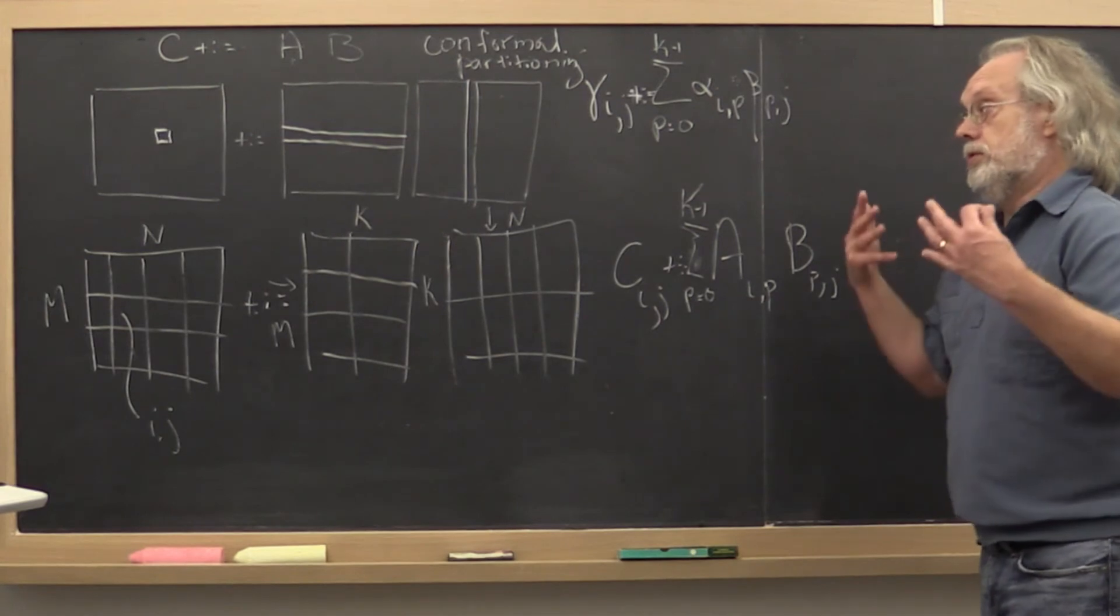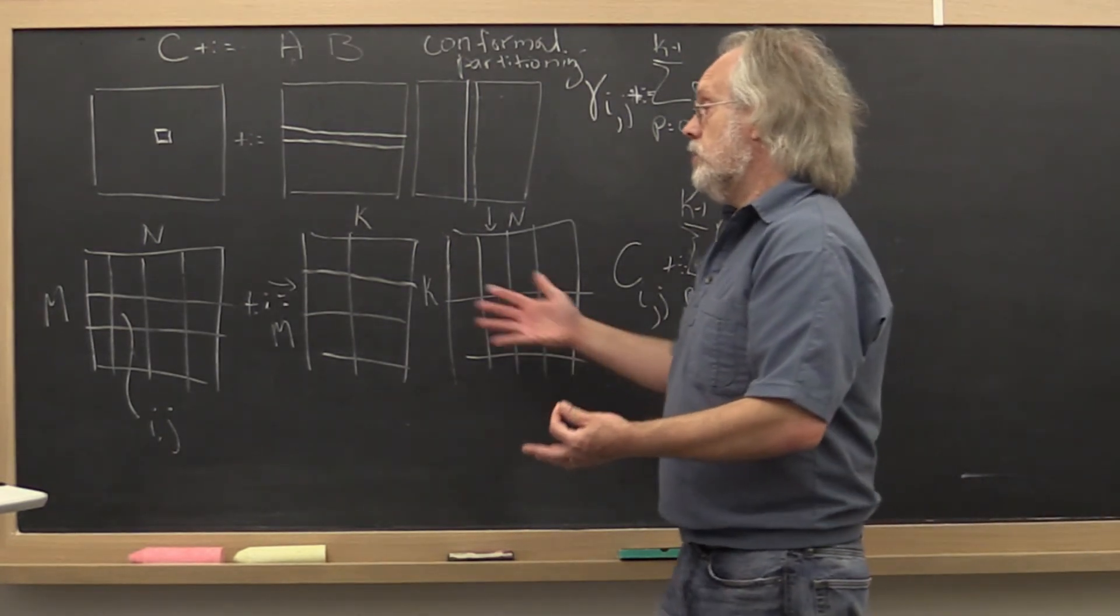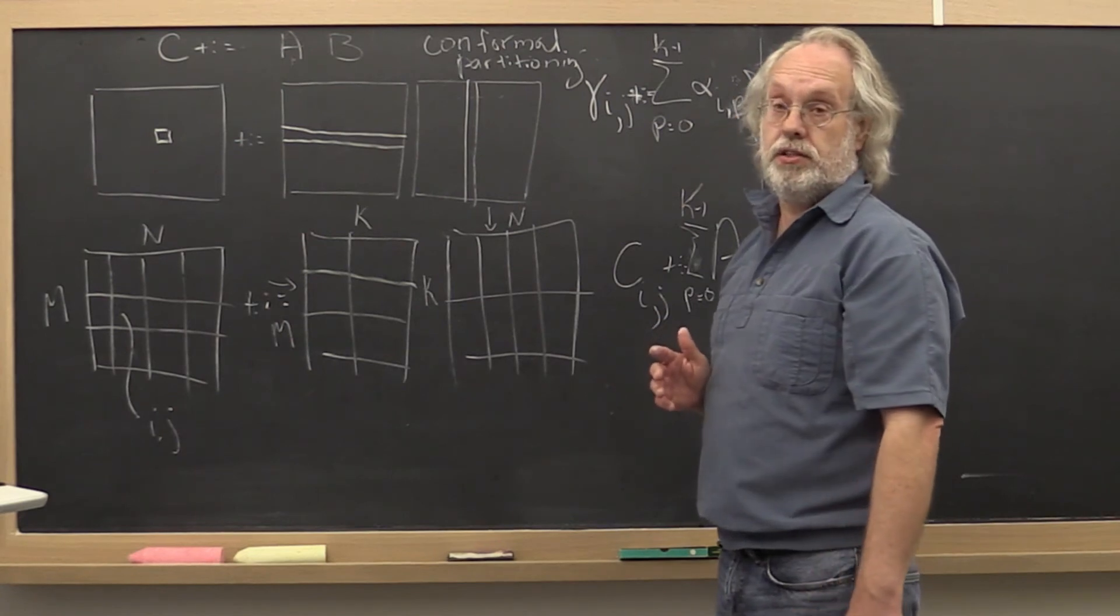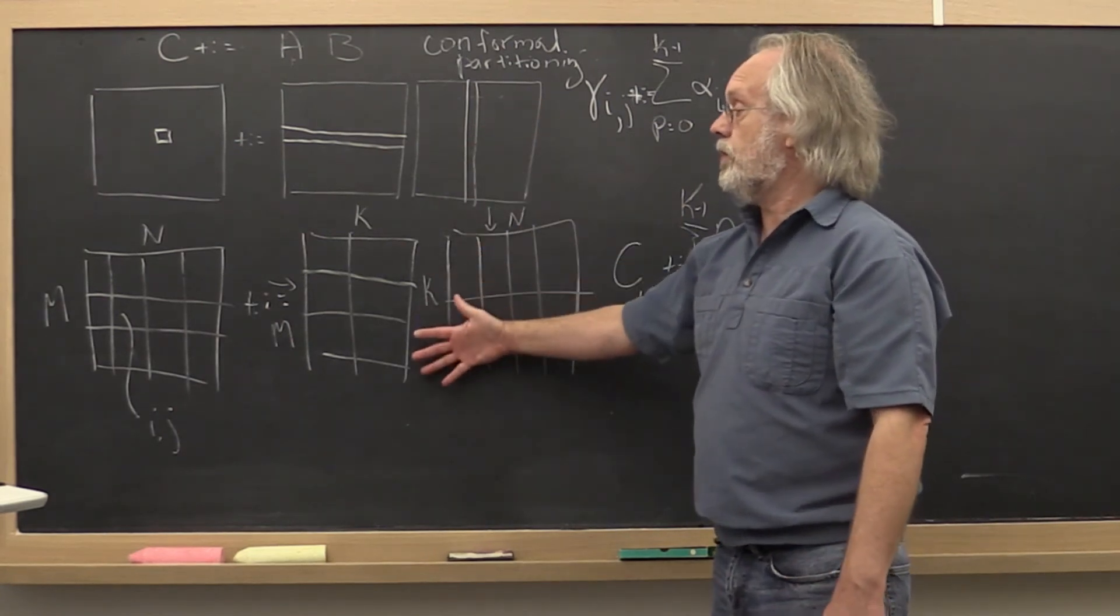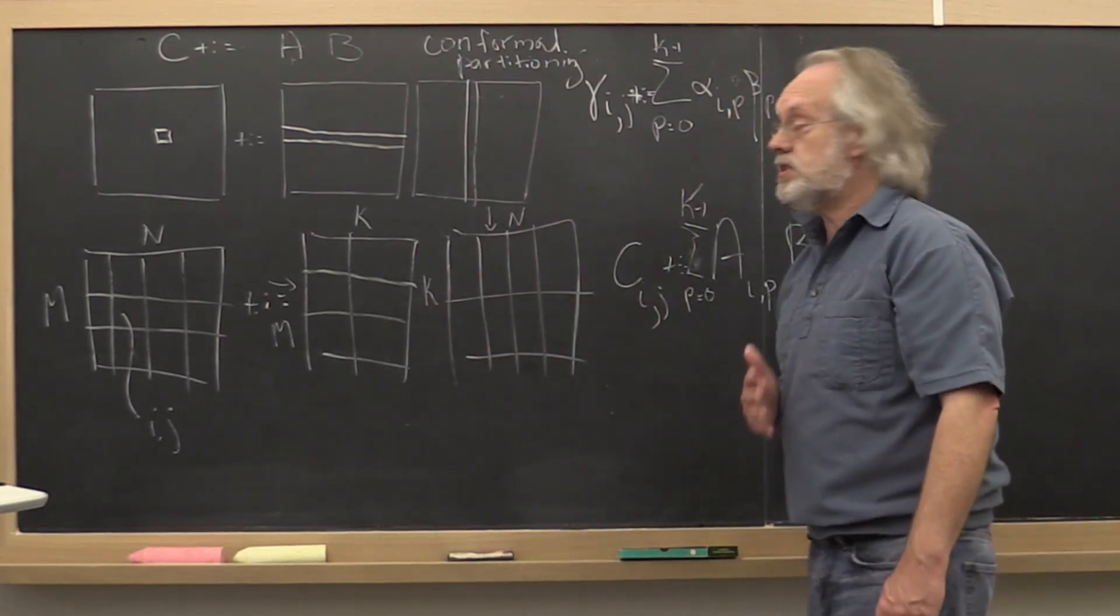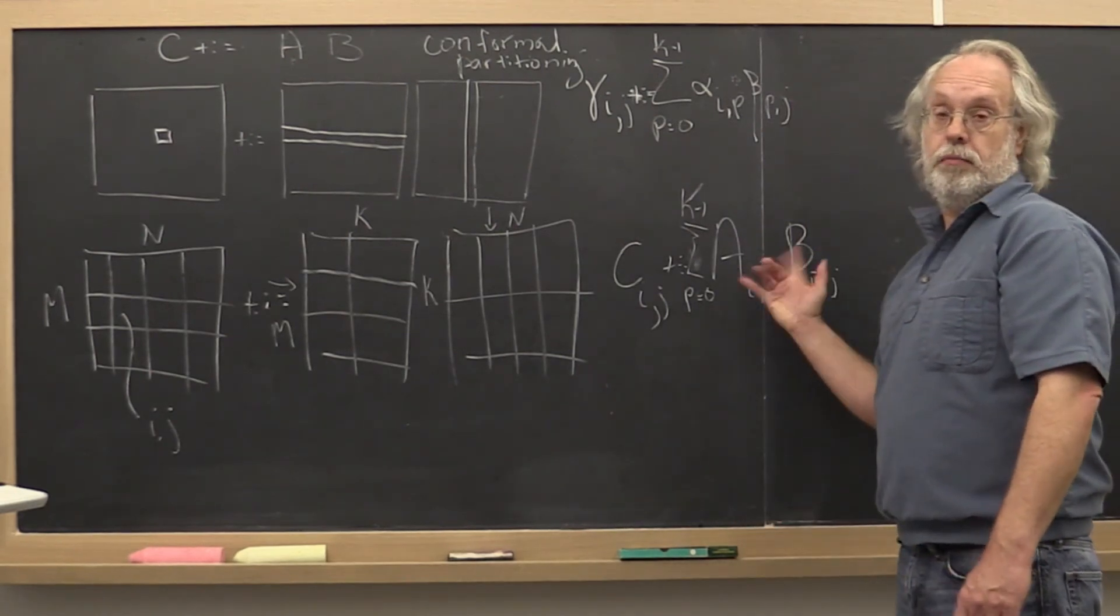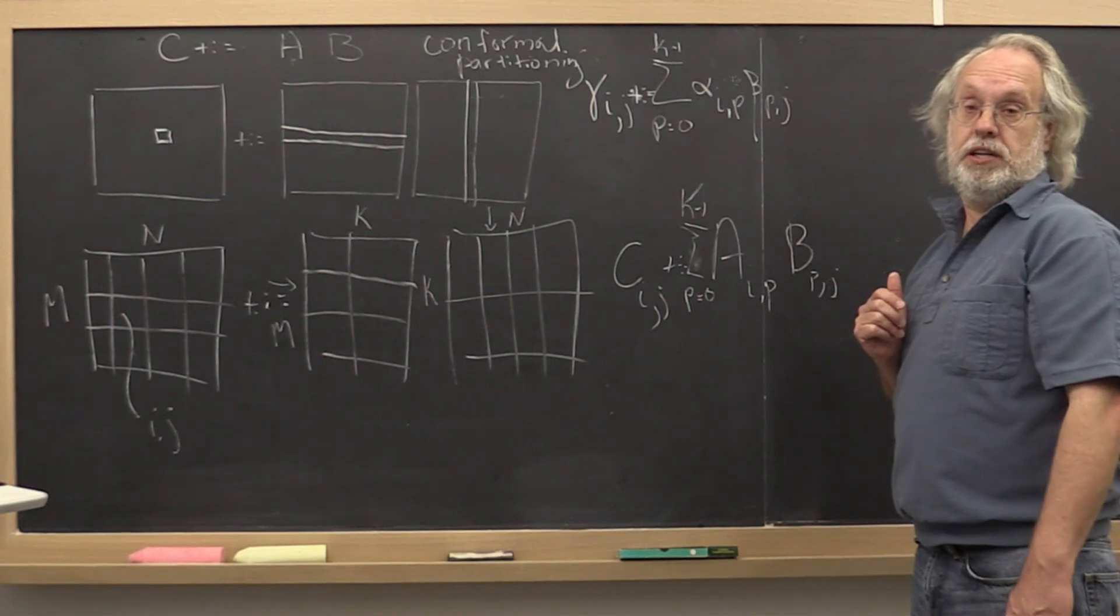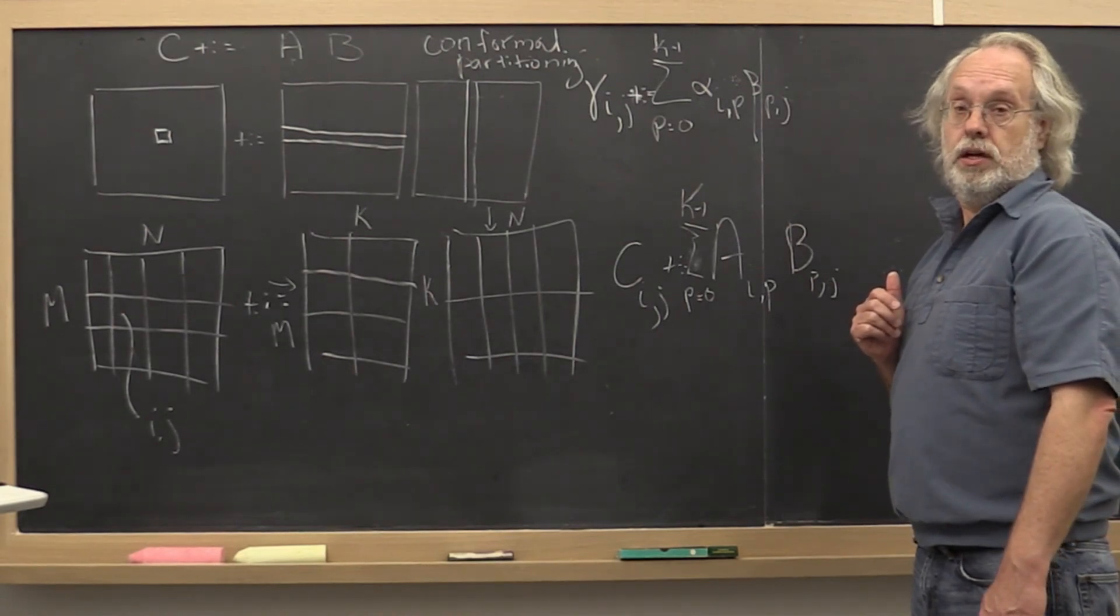So partitioned matrix-matrix multiplication works exactly like regular matrix-matrix multiplication, except you have to do it with conformally partitioned matrices. And you need to be careful about commuting the terms in the matrix-matrix multiplied that you encounter.